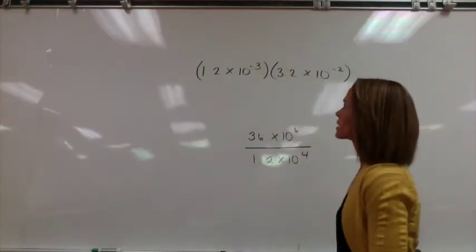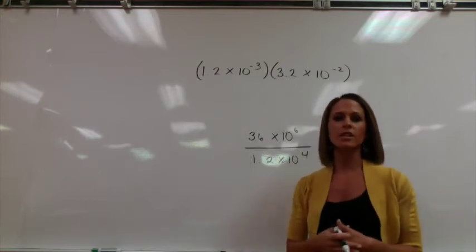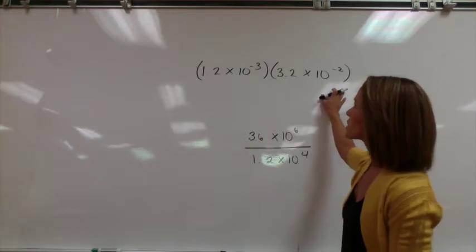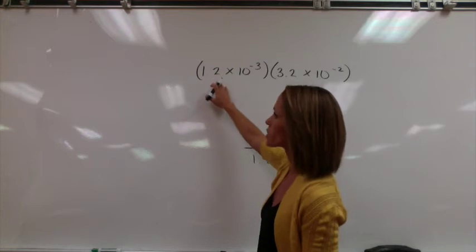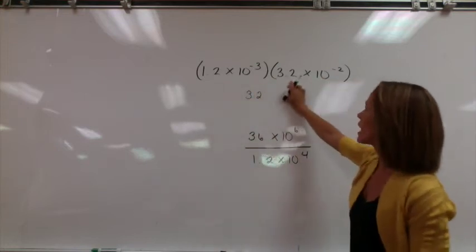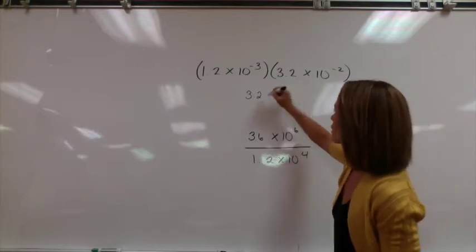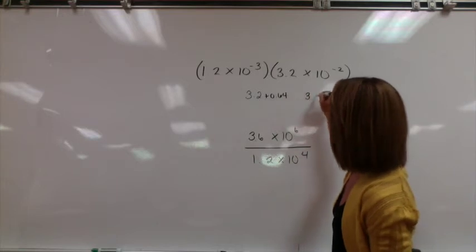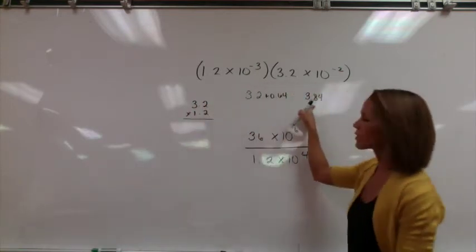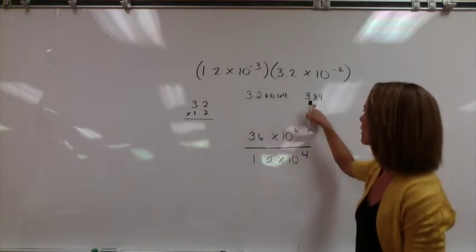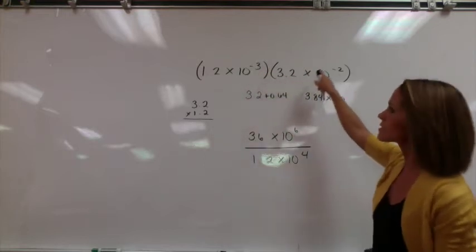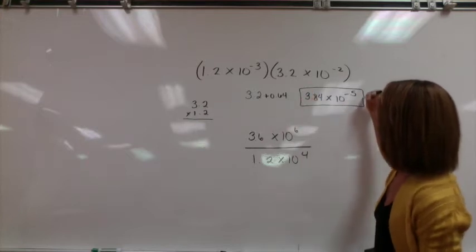Next we have a multiplication problem with some scientific notation. My best advice would be to turn everything into scientific notation that you don't know how to handle. When you use scientific notation, it's simple to just multiply coefficients and then work with the exponents later. We can look at this problem and just work with the 1 here. We know 3.2 times 1 is 3.2, and .2 times 3.2 gives .64, so we add .64 to get 3.84. When you multiply exponents, you add them: .3 plus .2 gives .5. The answer is 3.84 times 10 to the .5.